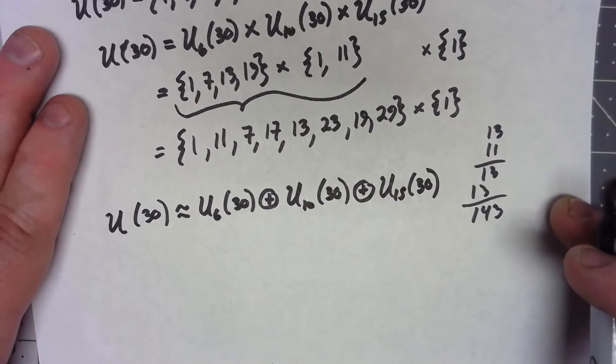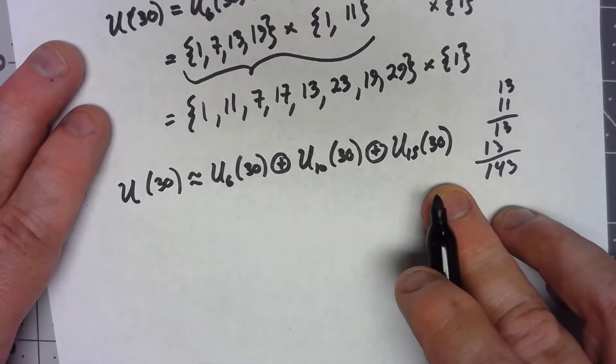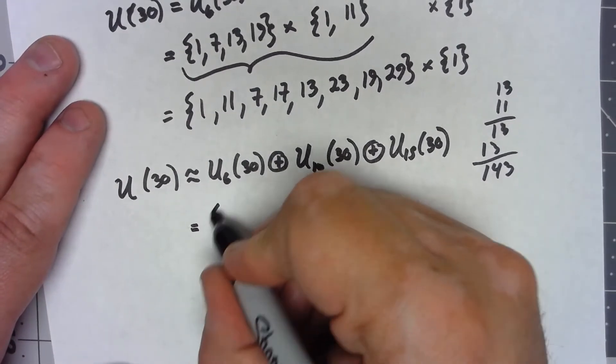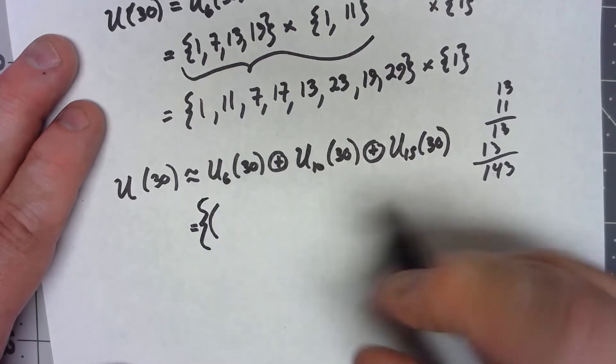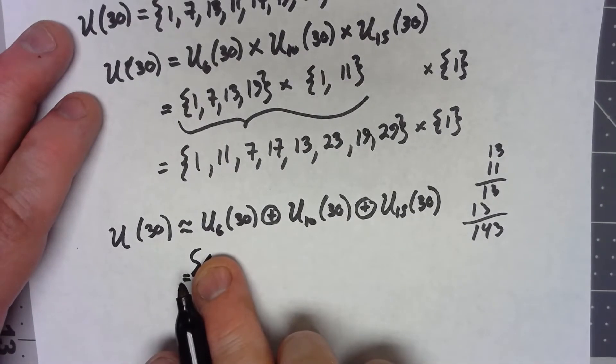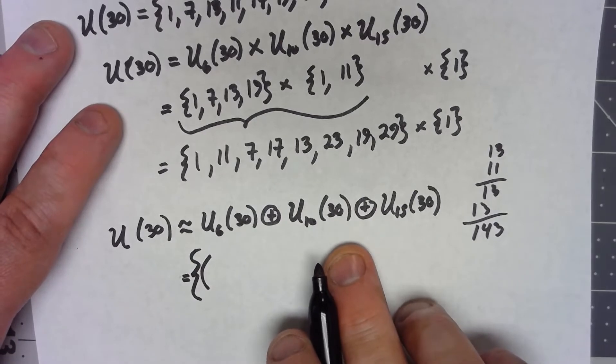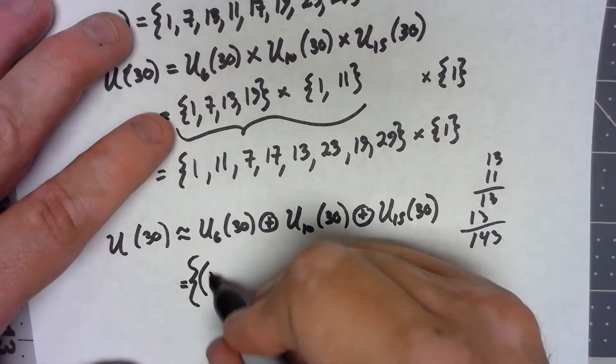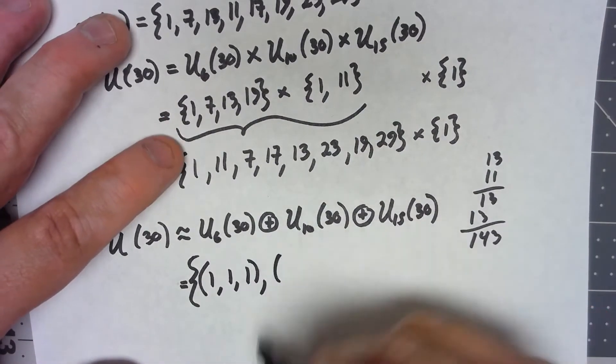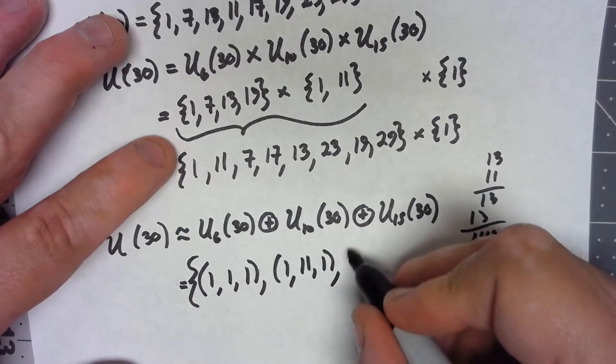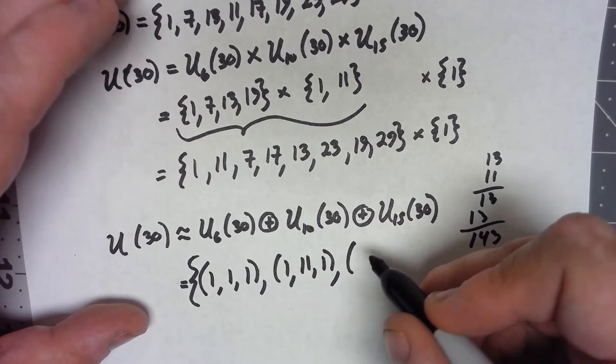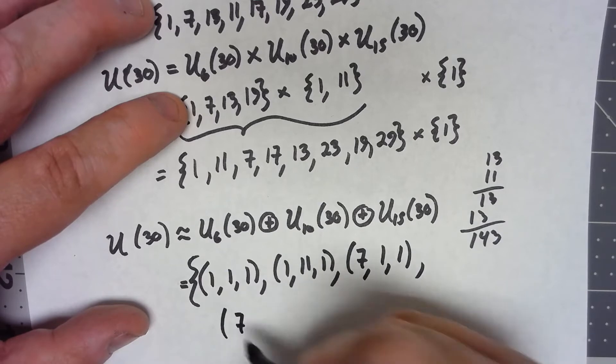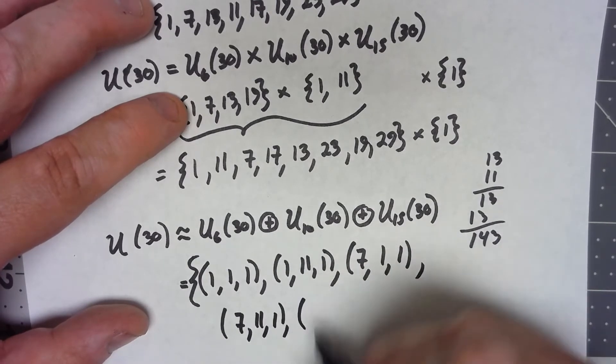Let's actually go ahead and list the elements there. These are going to be ordered triples where the first element comes from U6, the second element comes from U10, and the third element comes from U15. So we're going to get things like (1, 1, 1), (1, 11, 1), (7, 1, 1), (7, 11, 1), (13, 1, 1).